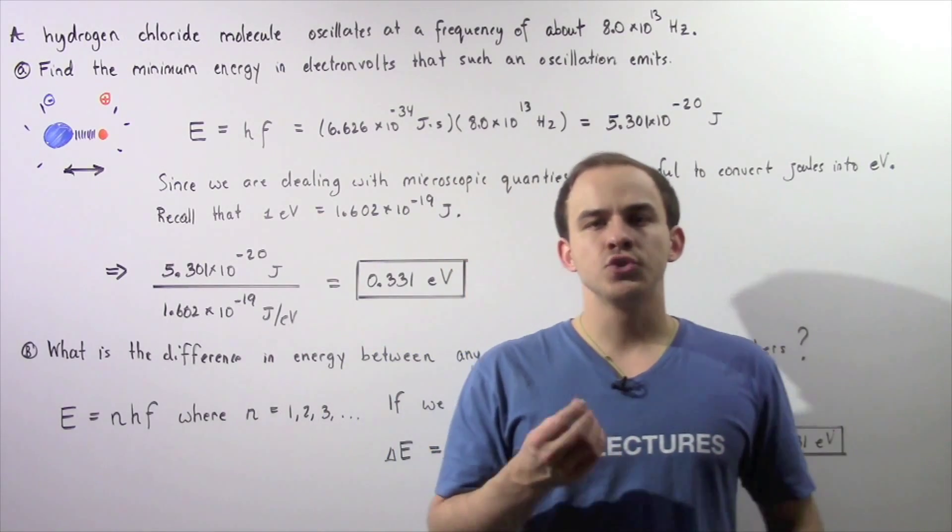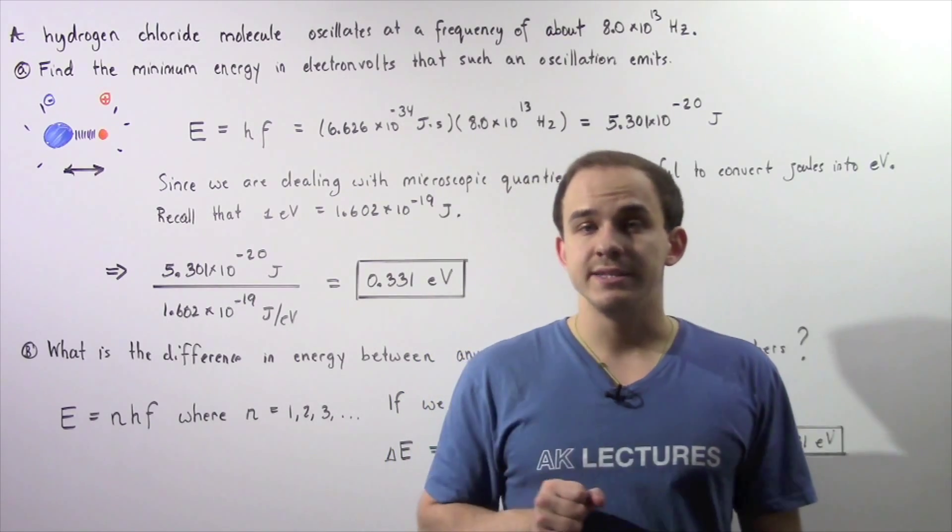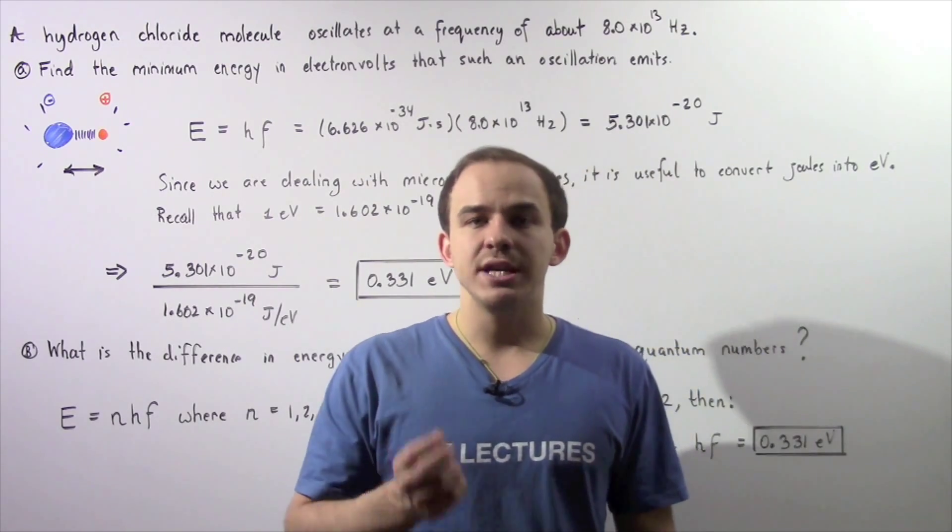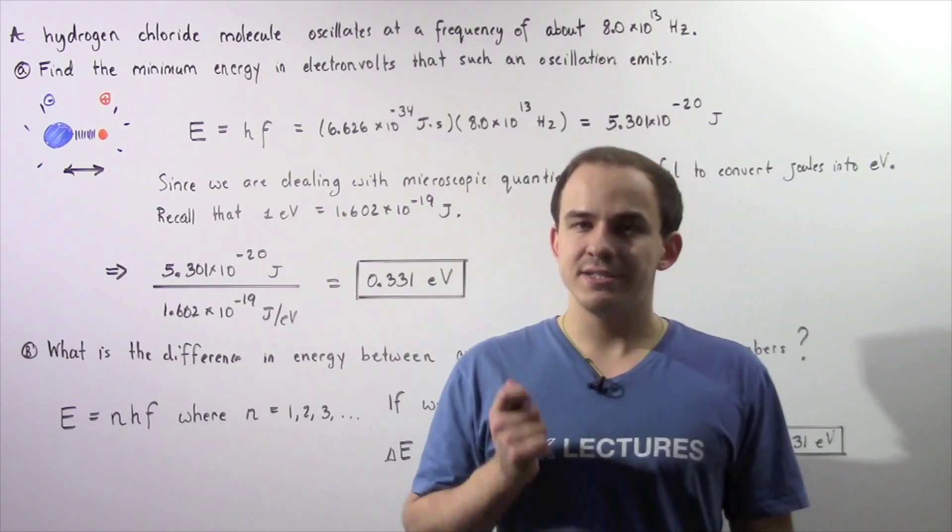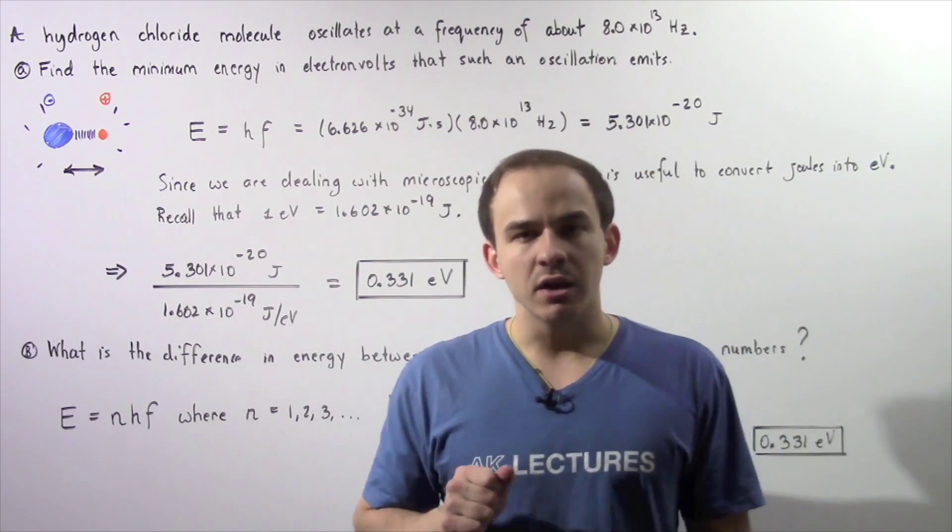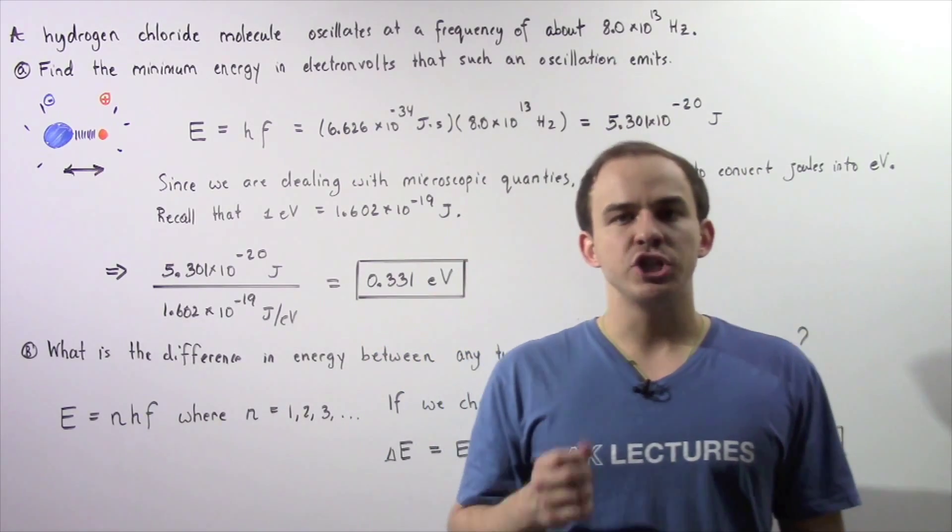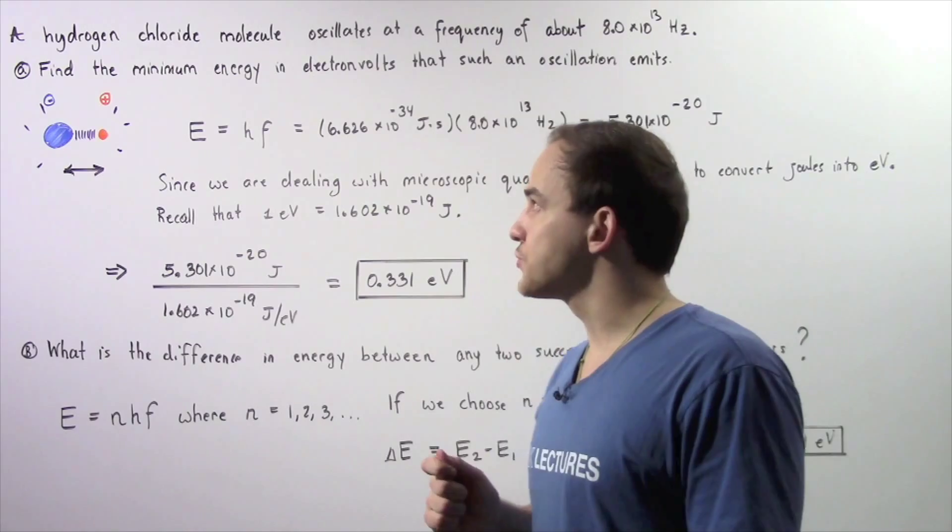In the previous lecture, we introduced Planck's quantum hypothesis, which basically tells us that energy is quantized—energy exists only in discrete units. Now let's look at the following example, which is a direct application of that hypothesis.